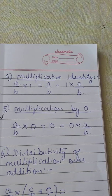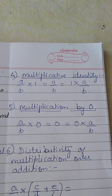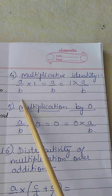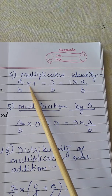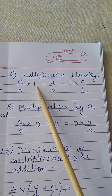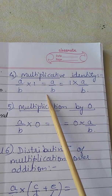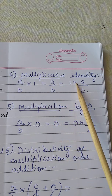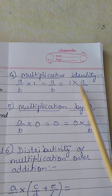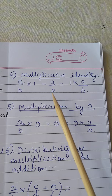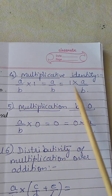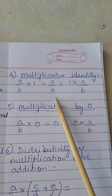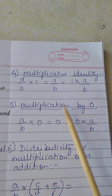Next is multiplicative identity. Here, a/b multiplied by 1 gives a/b, and if 1 is written first — 1 × a/b — the answer is also a/b. So in whichever order you write it, you always get a/b.